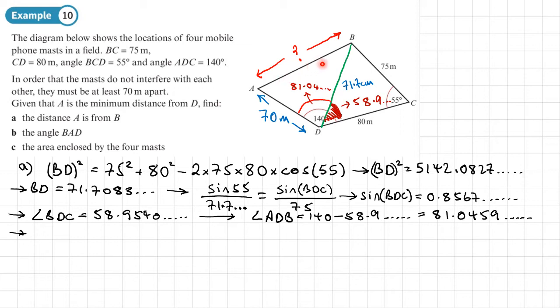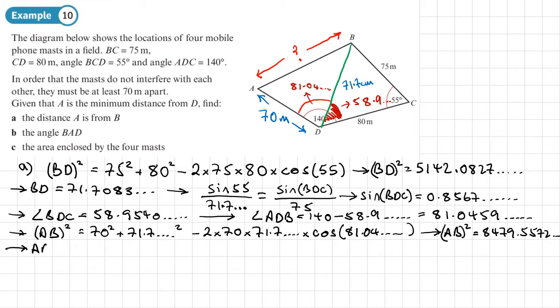So we're now going to be working out AB. So AB squared is going to be equal to 70 squared plus the 71.7 dot squared minus 2 times 70 times 71.7 times the cosine of the angle between them, and that's the cosine of 81.04. So I can use the answer button here, but for this 71.7 I'll type in 71.7083. So for AB squared that gives me 8479.5572. So AB, the length I want to find, I'll just square root that, so square root my answer, and I get 92.0845.